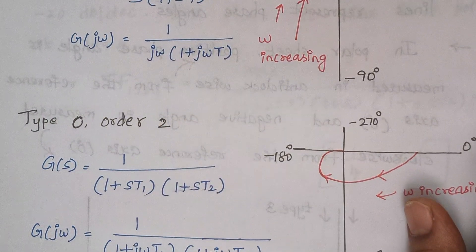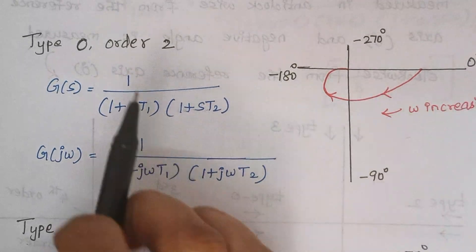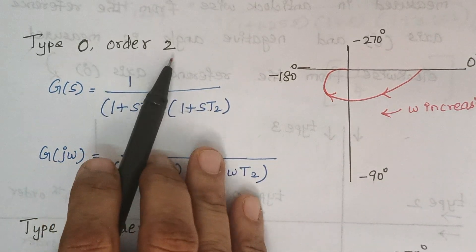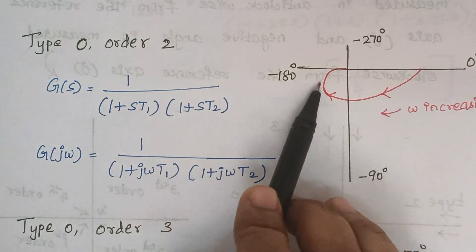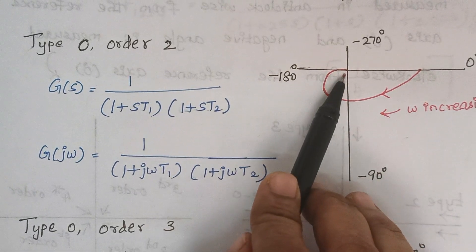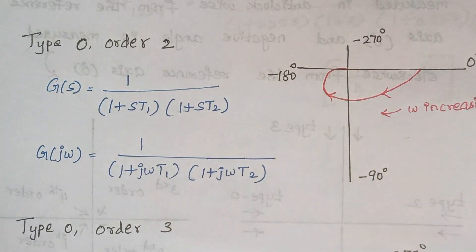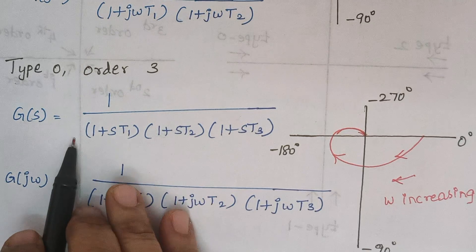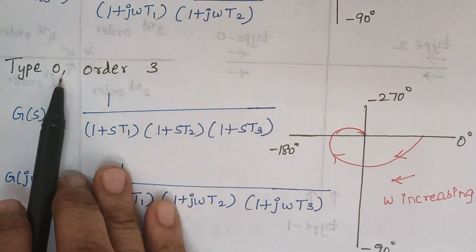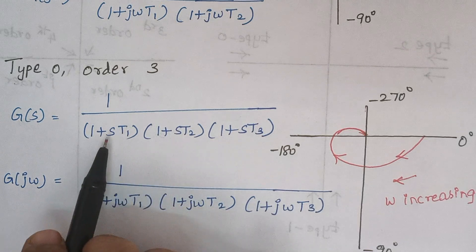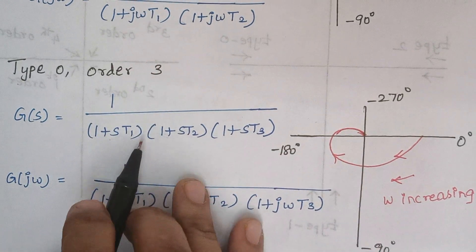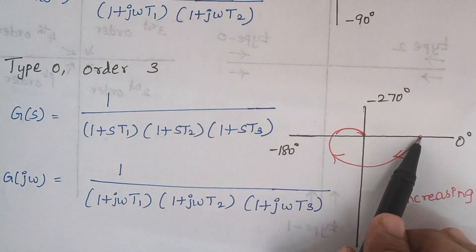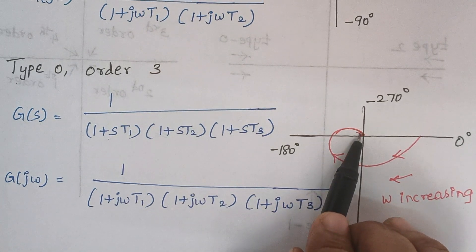For type 0, order 2: there is no individual s term, so the type is 0, and the maximum power of s is 2, so the order is 2. The polar plot will start at 0 and end at minus 180 degrees. For type 0, order 3: again no individual s, so type is 0, and multiplying the three terms gives a maximum power of s as 3. The polar plot will start at 0 and end at the minus 270 degree line.